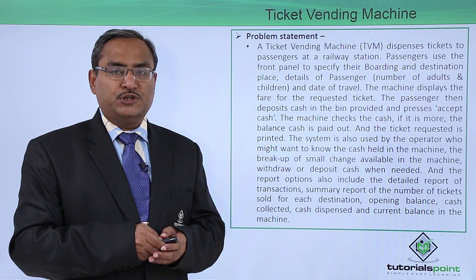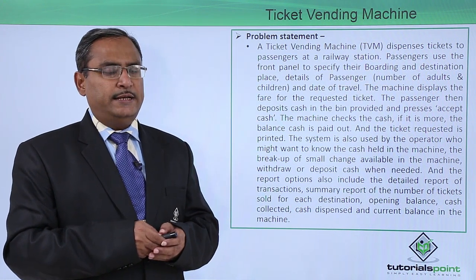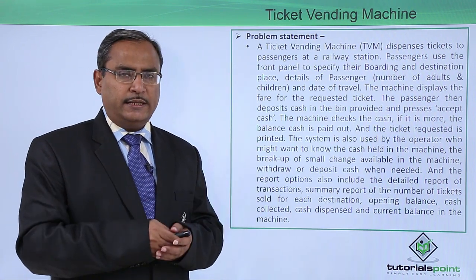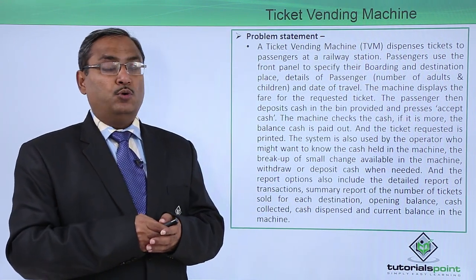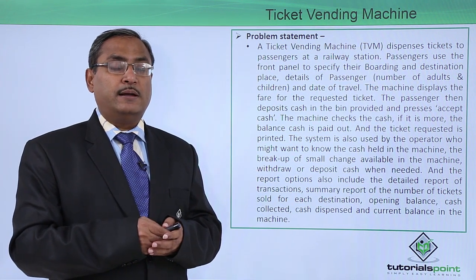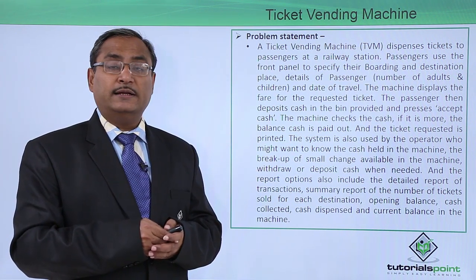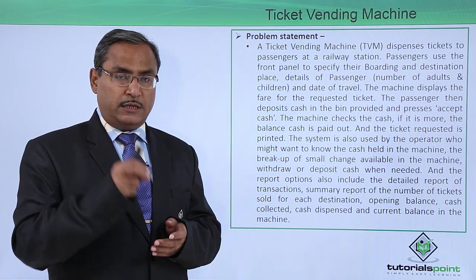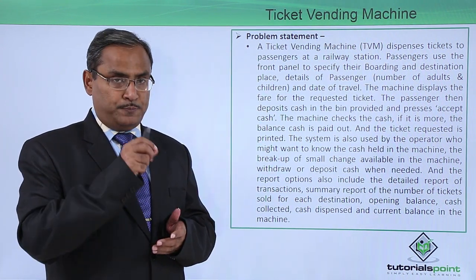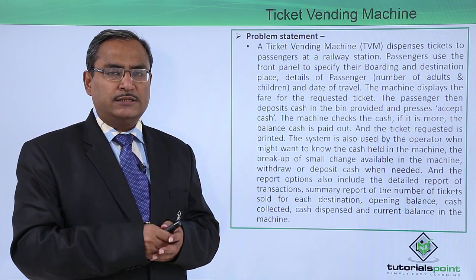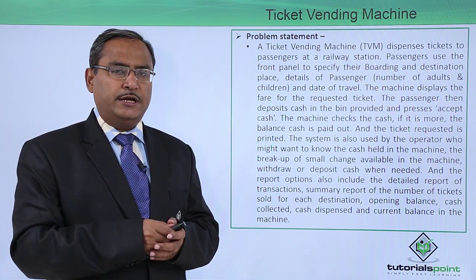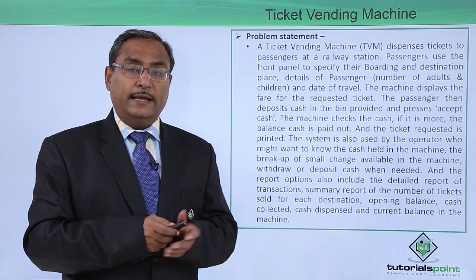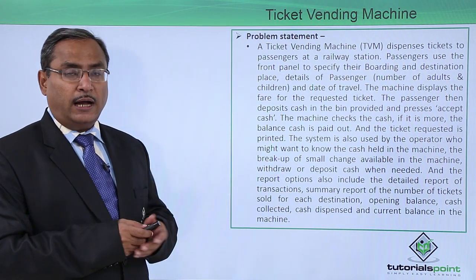This is the total problem statement. It is a ticket vending machine where a passenger puts in details about the number of adults, number of children, the boarding place, and the destination place. The fare is then shown, the respective amount is deposited into the machine, the machine accepts the cash, prints the ticket, and if there is any balance, it is paid out.